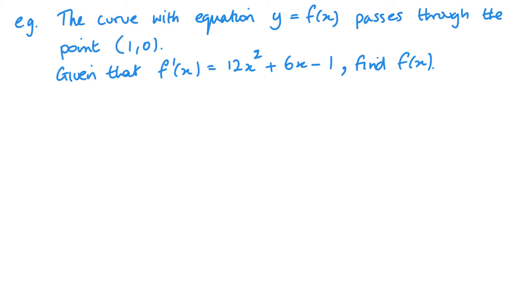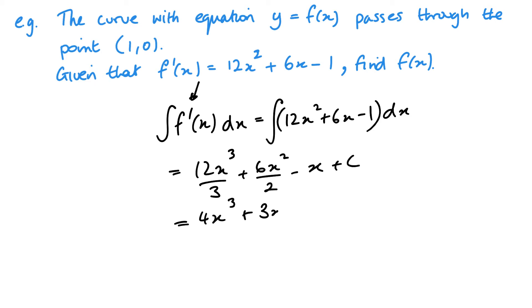So integrating this f'(x), I'm integrating 12x² + 6x - 1, and that would give me 12x³ over 3 plus 6x² over 2 minus x plus C. And simplifying I get 4x³ + 3x² - x + C, and this is now my f(x).